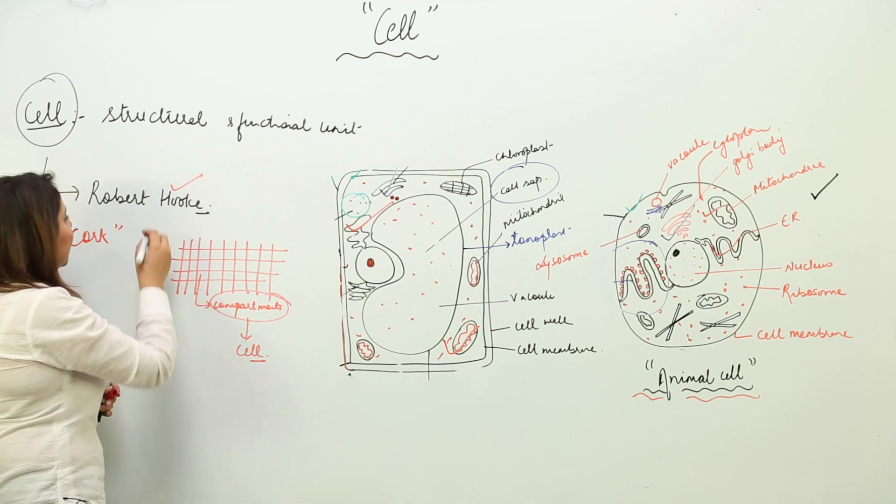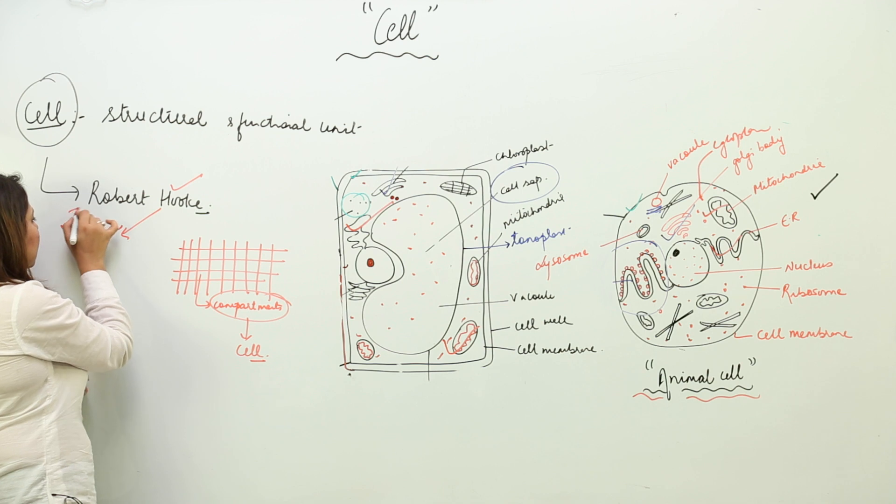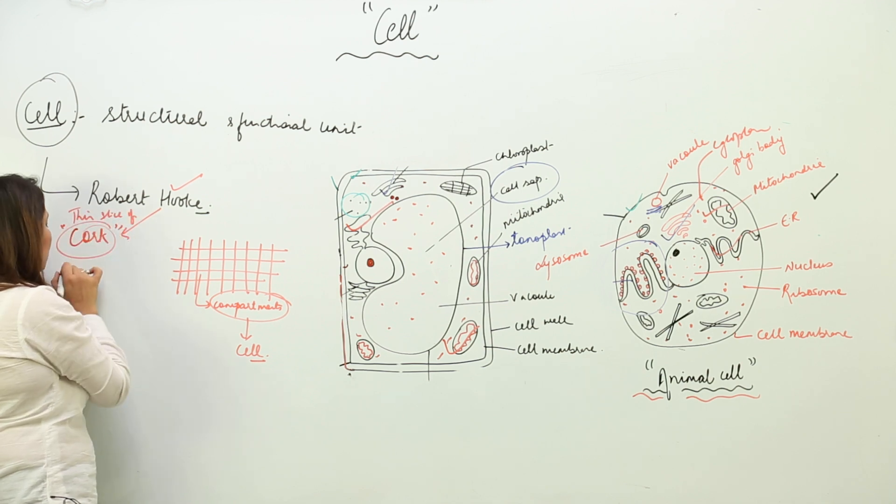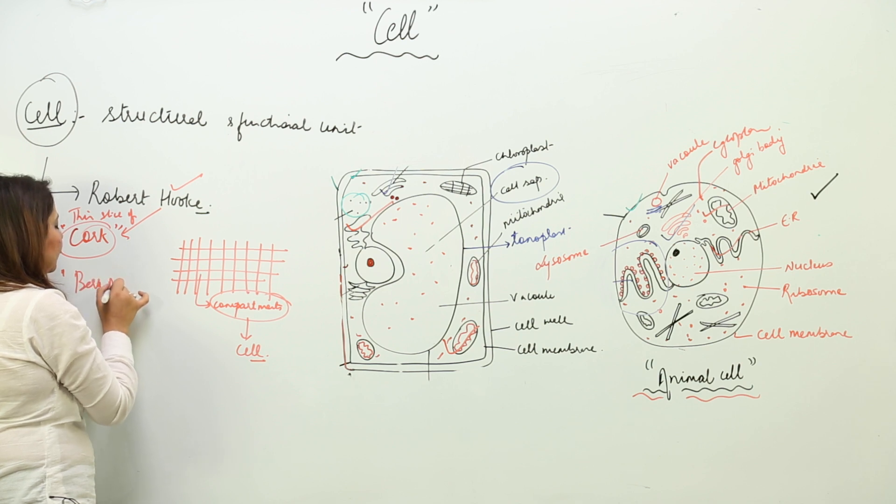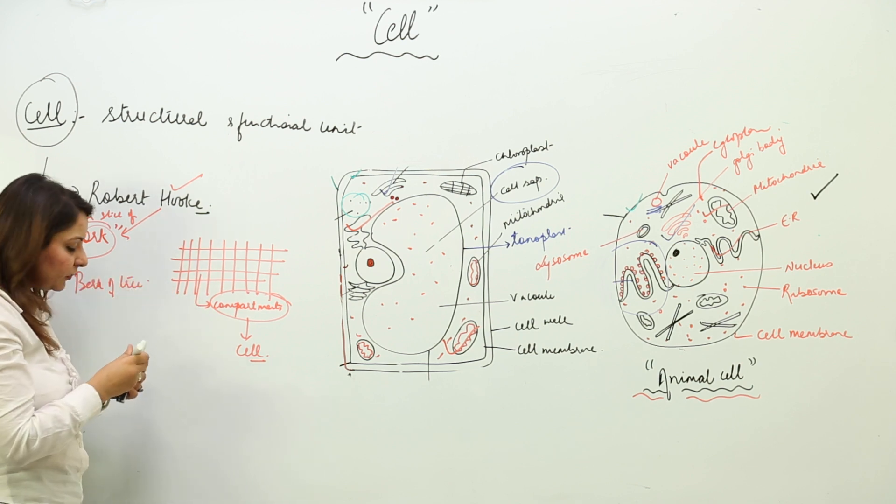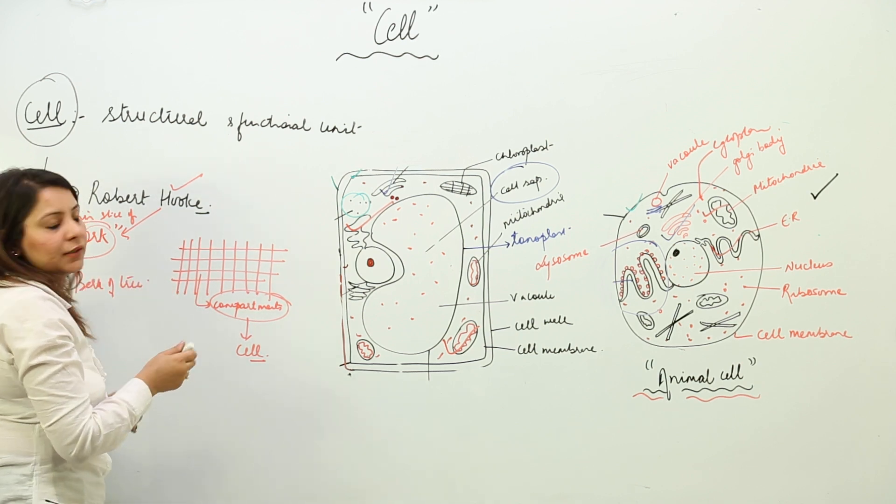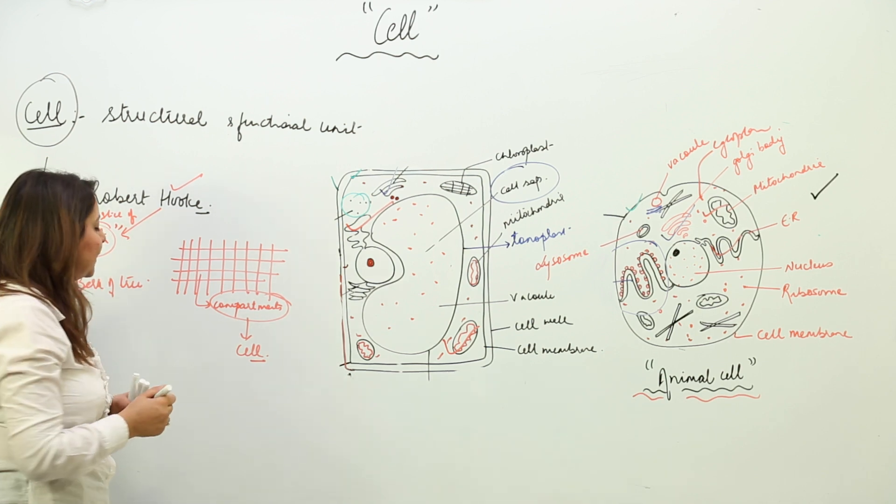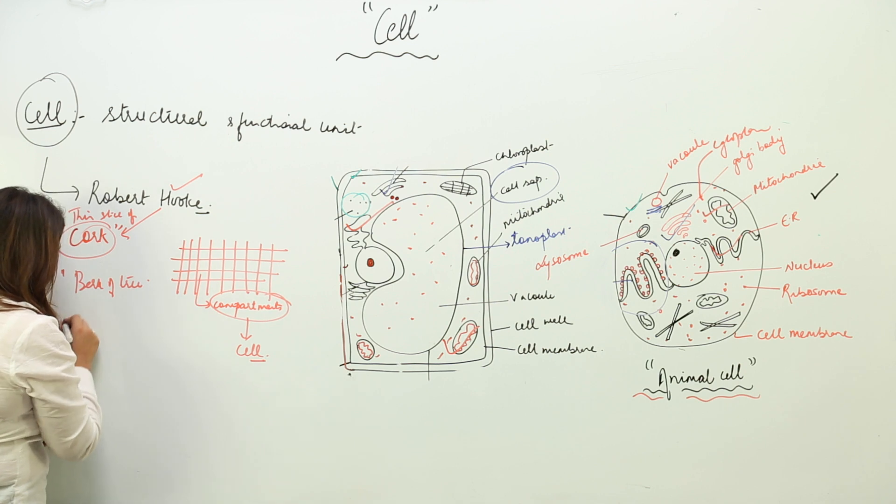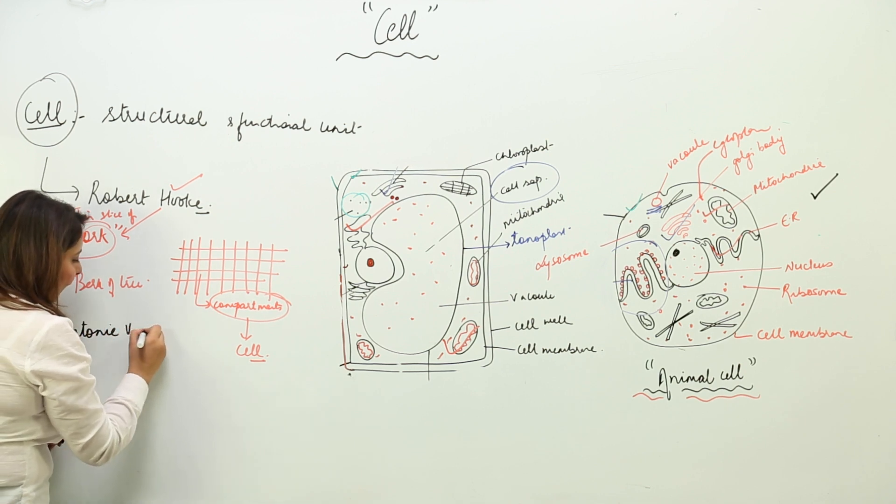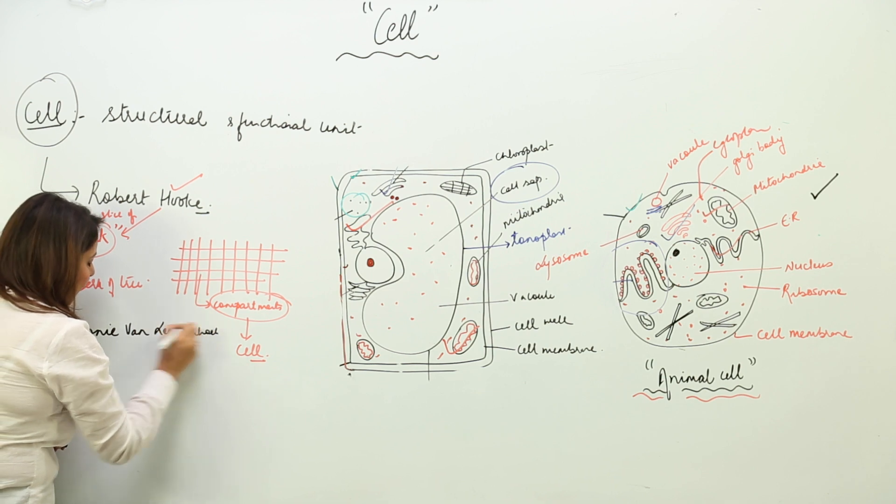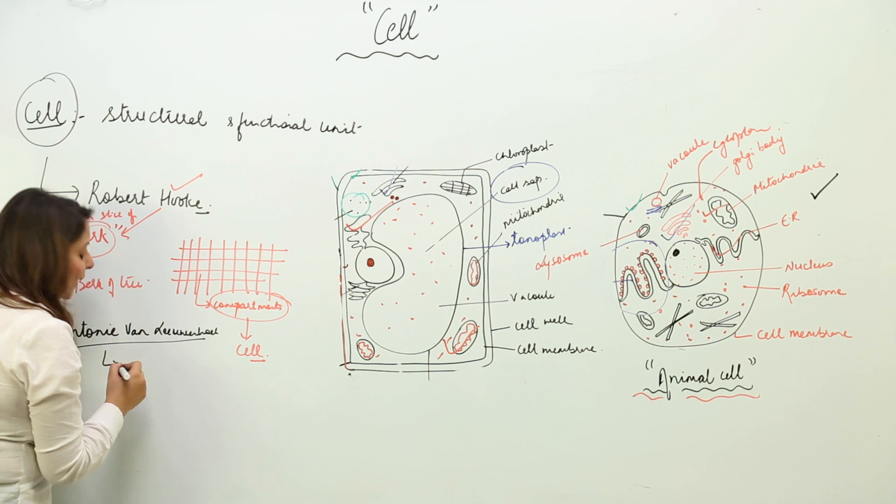So Robert Hook was the one who observed the cell for the first time in thin slice of cork, the bark of tree. He observed it under the microscope which contained two lenses. Later on, the microscope was discovered by Anton van Leeuwenhoek.